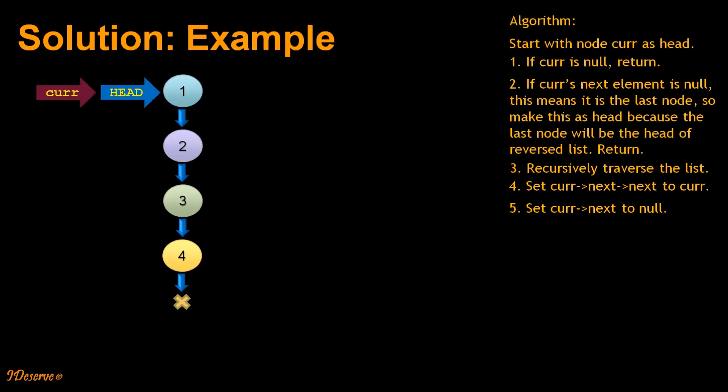Let us see how our solution works in real time using an example. We have a linked list 1, 2, 3, 4, where 1 is our head node. We start with node current as head. So current is currently pointing to head. We start with our algorithm.